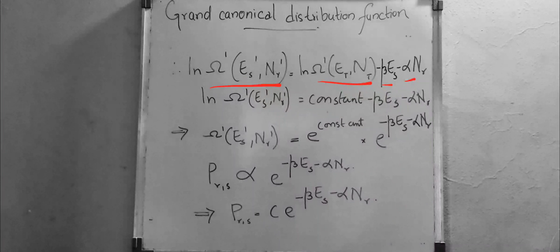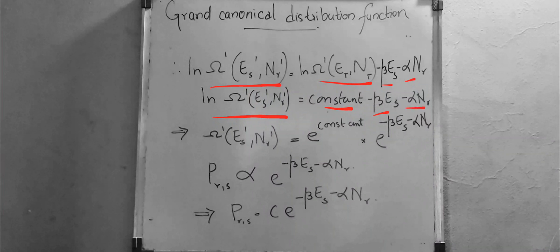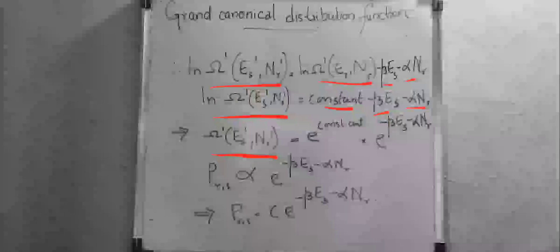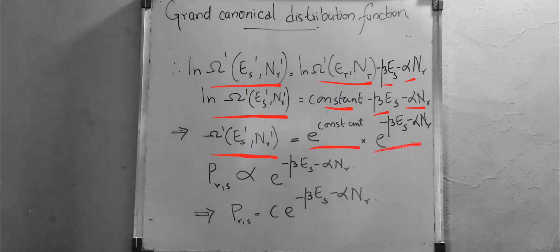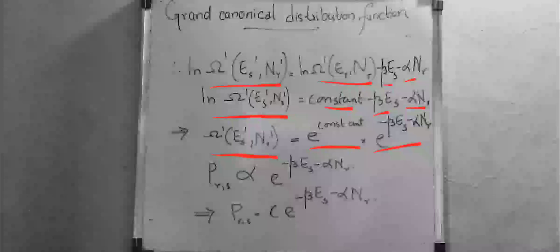Substituting these, log Ω'(E_S', N_R') equals log Ω'(E_T, N_T) minus β·E_S minus α·N_R. Taking the exponential on both sides, Ω'(E_S', N_R') equals e^(constant) · e^(-β·E_S - α·N_R).